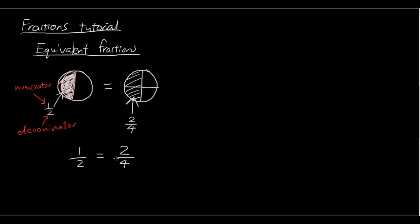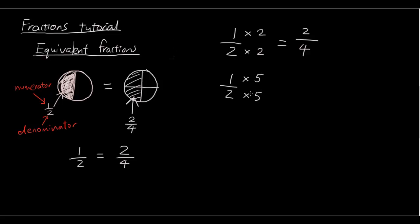So how do we go from a half to two over four? All we have done is multiply by two on both the numerator and the denominator. One times two at the top gives us two, and two times two at the bottom gives us four. You are allowed to multiply or divide by whatever you want as long as you do it to both the top and the bottom. For example, if we have a half and we multiply by five on both top and bottom, that gives us five over ten — so a half is equal to five over ten.